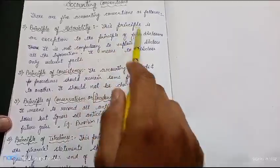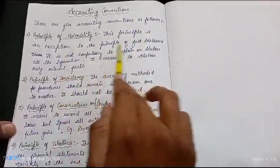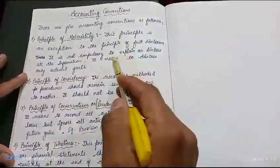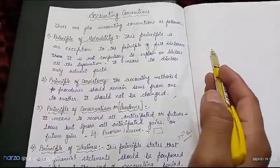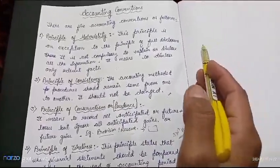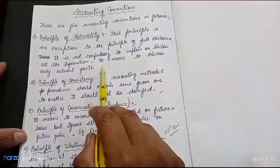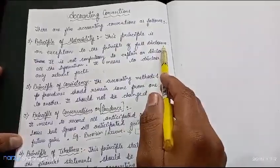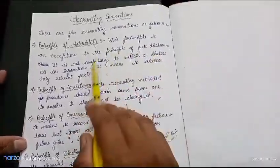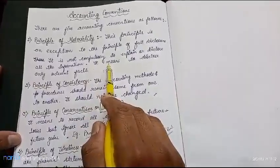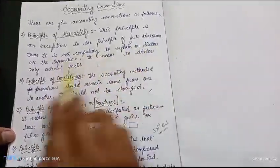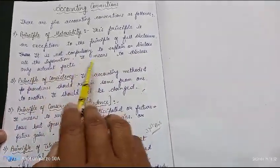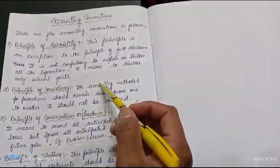The principle of materiality means this principle is an exception to the principle of full disclosure. This means that whatever information we record in accounting transactions, which is also recorded in the balance sheet and general entry, we disclose only relevant facts. For example, if you are a very big company, only relevant information needs to be disclosed.